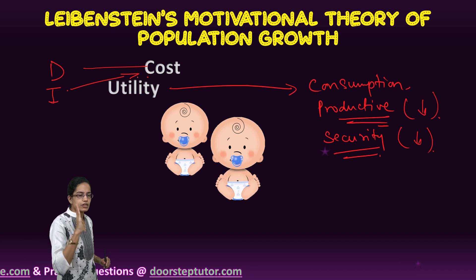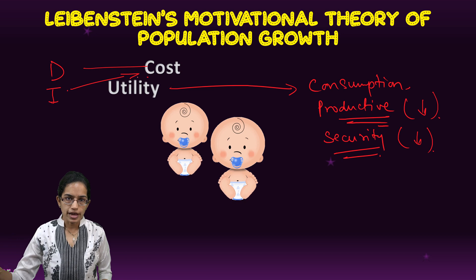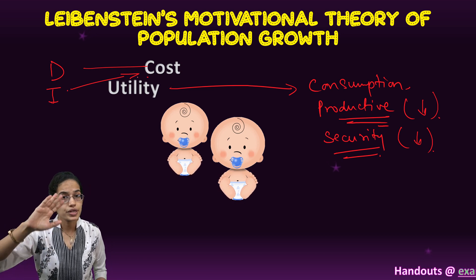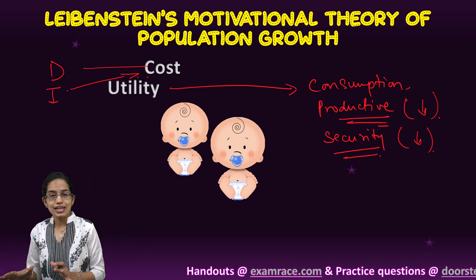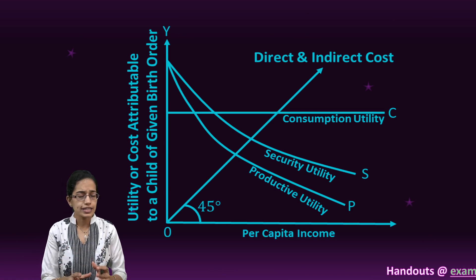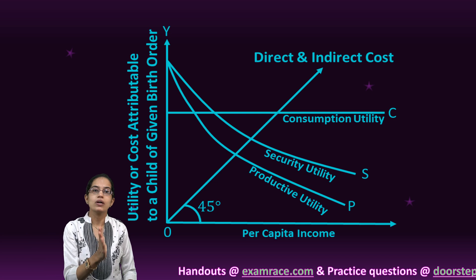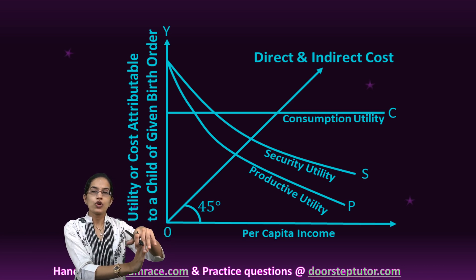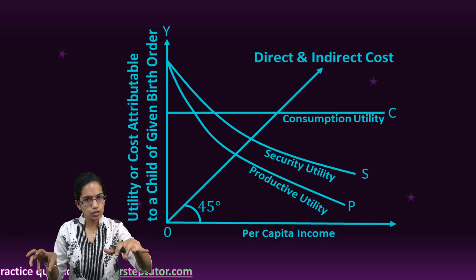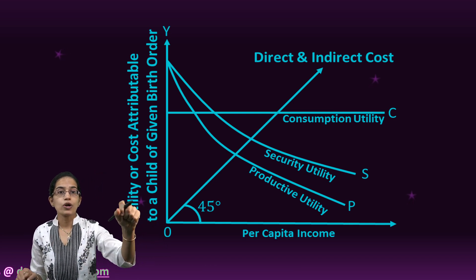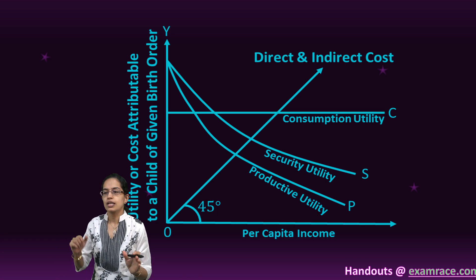The indirect cost associated with rearing a child refers to the number of working days lost by a working mother and the reduction in social mobility of the parents. This cost rises with per capita income because a person of higher per capita income holds a job where they earn relatively more, so the implication of that cost being cut out would be much higher.